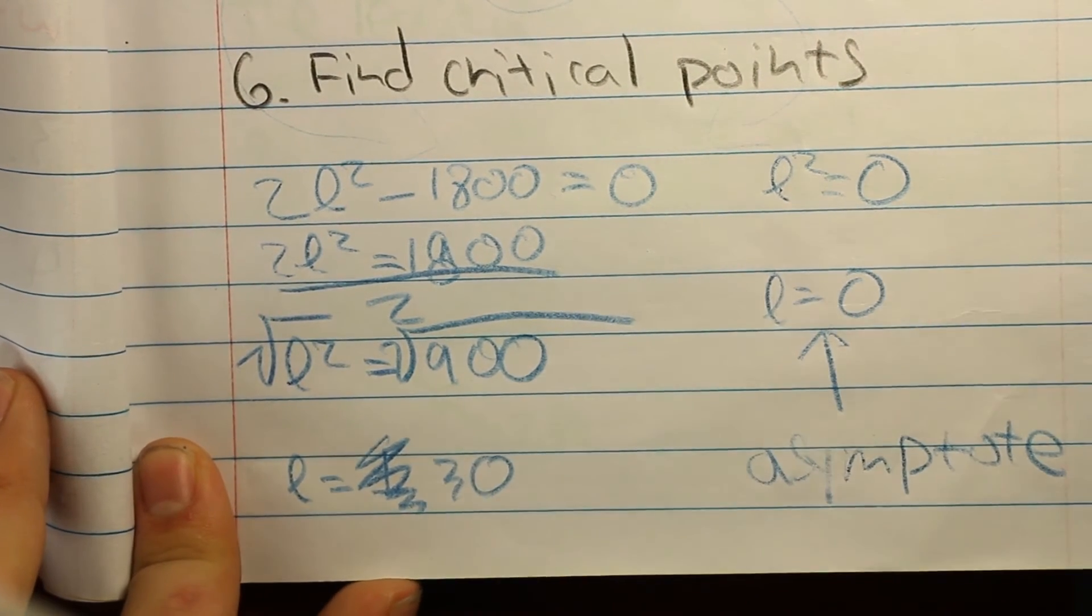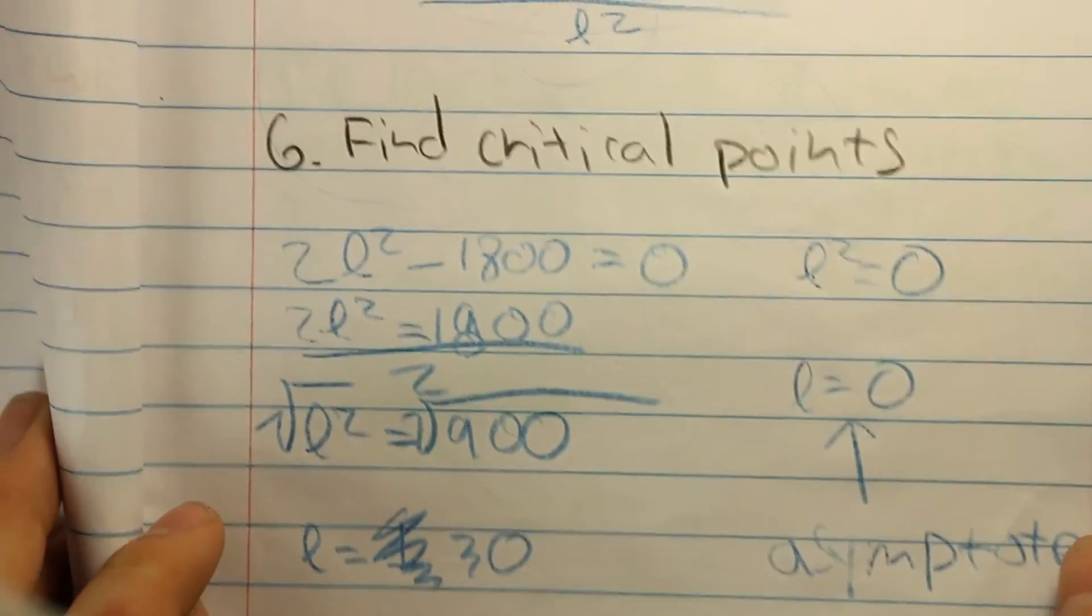So when L equals 0, that creates an asymptote. And we cannot use that.